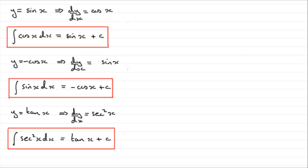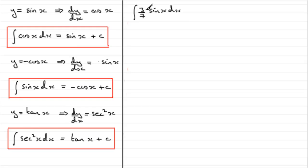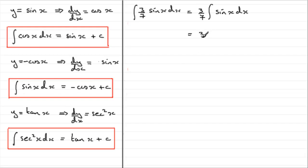So you need to remember these results. Let's do a few examples. We'll start by doing the integral of 3 sevenths sin x with respect to x. When you get a number in front of a trig function like this, you can pull that constant out the front of the integral. So we get 3 sevenths times the integral of sin x with respect to x. The integral of sin x is minus cos x. So you've got 3 sevenths times minus cos x — putting that minus at the front: minus 3 sevenths cos x, plus the constant of integration.